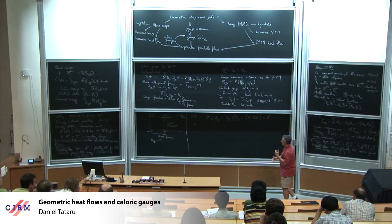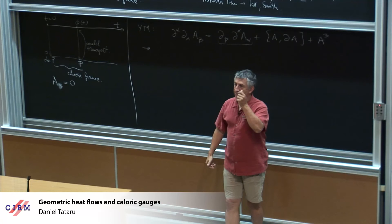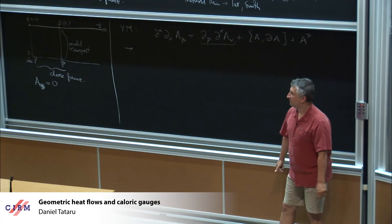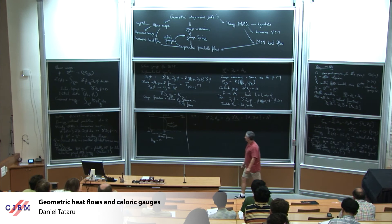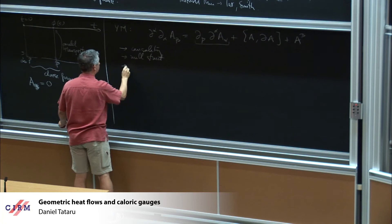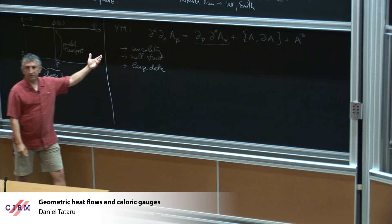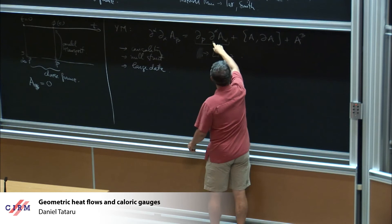Most important of all, if you want to have a gauge that helps you prove a threshold theorem, you need a gauge that works for large data. So you care about causality, null structure, and also large data. There are several traditional gauges for this problem. The obvious gauge you'd come up with is the Lorentz gauge: you simply ask that D_alpha A_alpha = 0, which kills that bad term outright, and you're left with a second-order hyperbolic system for A. The downside of the Lorentz gauge is that you lose the null structure.